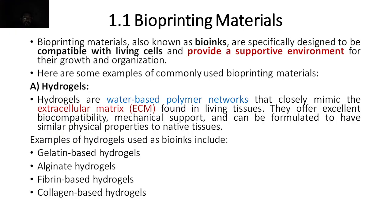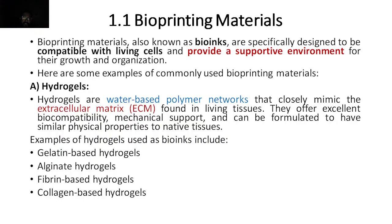Here are some examples of materials used for the bioprinting technique. The first is hydrogels. In the name itself — hydro means water, gels means polymer networks. Hydrogels are water and gel polymer networks that closely mimic the extracellular matrix, meaning they function as an ECM. The extracellular matrix provides strong support to tissues and cells inside our body and acts as a physical or mechanical support for living tissues.